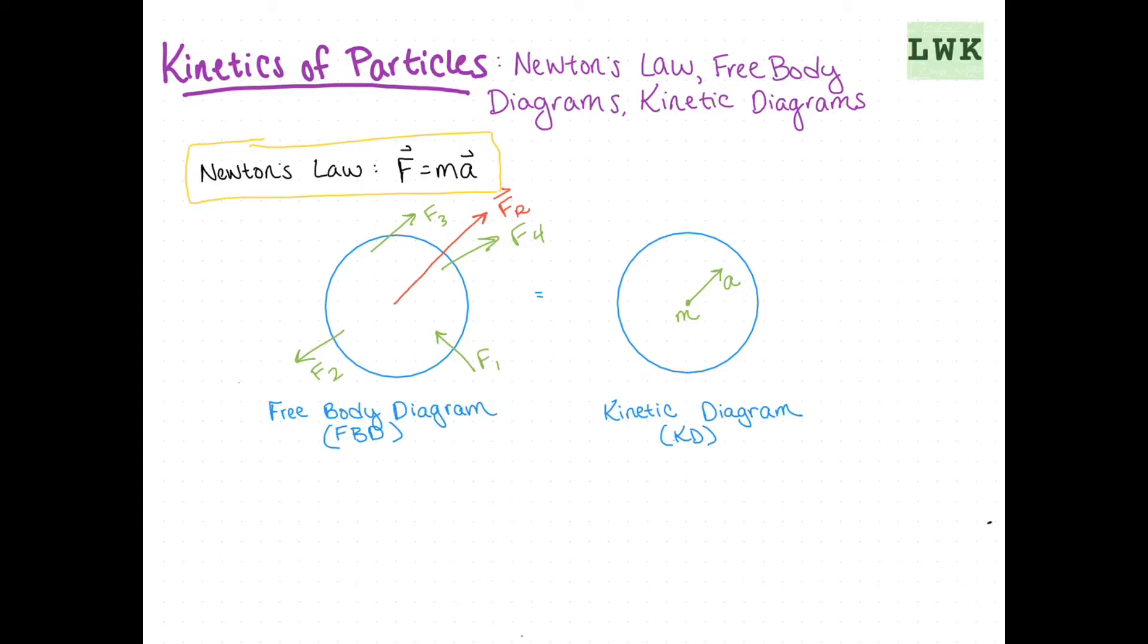You could say these two represent the left and the right-hand side of Newton's equation. On the left, we have all of our forces, and on the right, we have our mass and our acceleration. You can note here that our acceleration is in the same direction as our resultant force, but it's not going to be scaled the same. We're going to have our mass here as a scaling factor. So our acceleration will be pointed in the same direction, but not the same length.